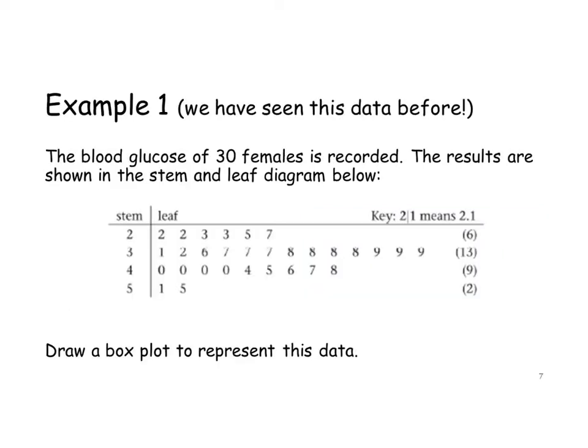So let's look at an example. This data we have seen before — it was in the last video on outliers. It's a stem and leaf diagram showing the blood glucose of 30 females. But this time, we want to draw the box plot to represent the data.